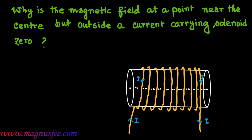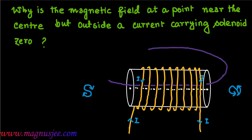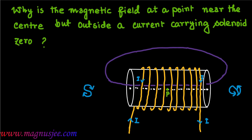I is the current flowing downwards through each turn of the solenoid with respect to the front view. S and N are the magnetic poles induced on the left end and right end of the solenoid. The magnetic field line, denoted by violet color, is a closed line with direction from south pole to north pole inside the solenoid.